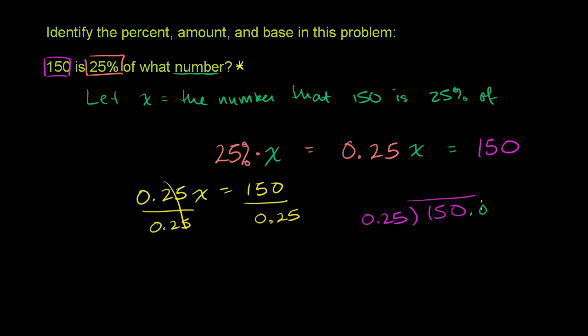So right now, you could do this as 150.00. If you multiply 0.25 times 100, you're shifting the decimal 2 to the right. Then you'd also have to do that with 150. So then it becomes 15,000. Shift it 2 to the right. So our decimal place becomes like this. So 150 divided by 0.25 is the same thing as 15,000 divided by 25.